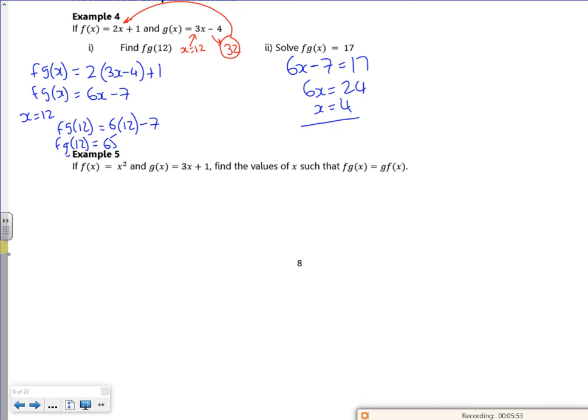So example 5. So I've got x squared for f of x. I've got 3x plus 1. So I've got to find the values of x such that they're equal. But f of g of x is equal to g of f of x. Oh my word. Right then, so f of g of x. So I'm putting g into f. That's 3x plus 1 squared. g of f of x is putting f into g. So that's 3 lots of x squared plus 1. So there are my two composites.